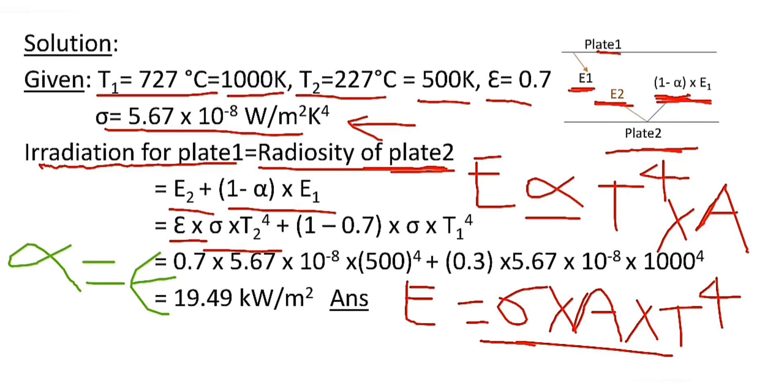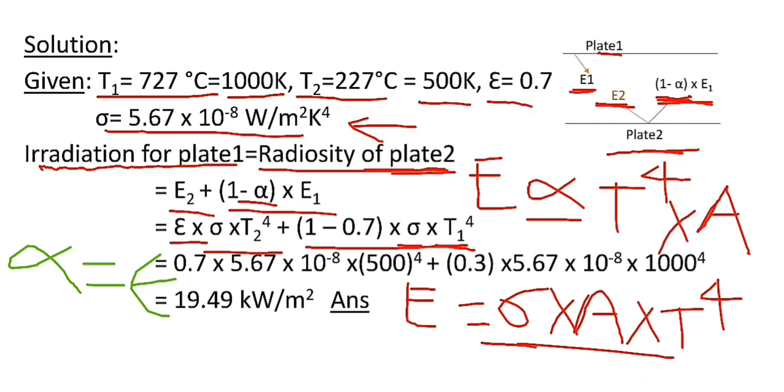So here α is equal to 0.7 and it becomes (1-0.7) × σ × T₁⁴. After putting all known values here, we are getting the value of irradiation for plate 1 is equal to 19.49 kW/m².